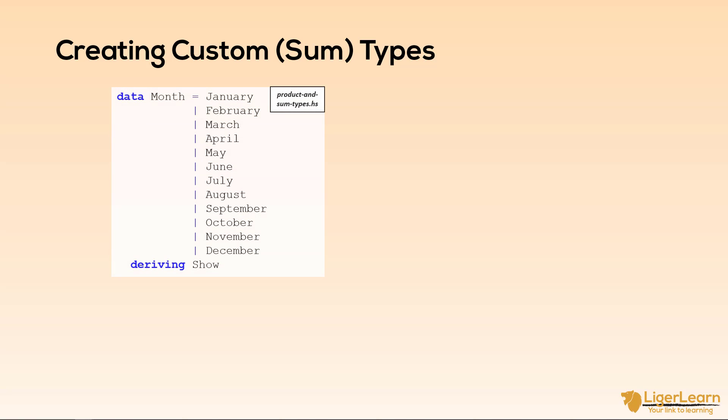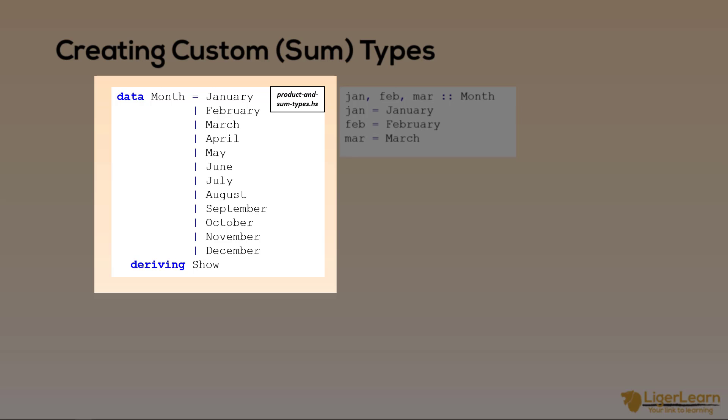Okay, let's see how we would do that. Here is the data type definition, and here are some instances of the type month, which we have defined. Let's focus on the data type definition. We are creating a custom type called month, which can take the value January, or February, or March, and so on. We add the deriving show clause to our type declaration so that when we try to view instances of the month type in GHCI, they will be displayed without running into any annoying errors.